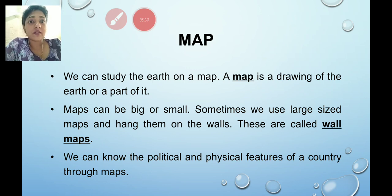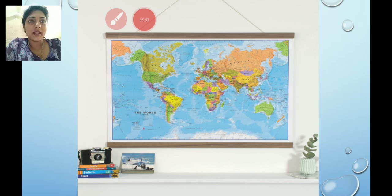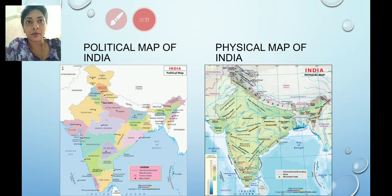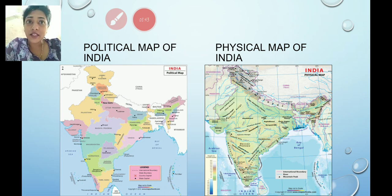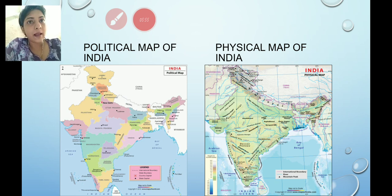We can know the political and physical features of a country through maps. Now, what is the difference between a political map and a physical map? A political map shows the country, states and cities. The physical map shows all the different landforms — that is, mountains, plains, plateaus, deserts, islands and rivers.